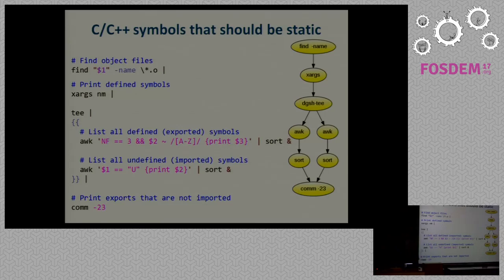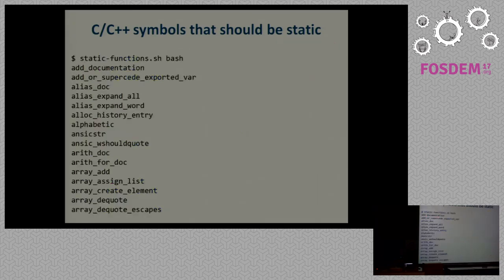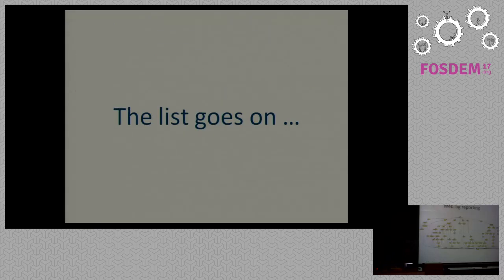Another interesting example is you want to find C and C++ symbols that should be static. You can do that very easily if you run nm on compiled files, and you find the symbols that are exported from various compiled files but are not imported into any other file. Those, obviously, symbols should be static because no one uses them outside that file. So again, a multipipe block on the output of nm to find those that are exported and those that are undefined. And those that are not imported are the ones that we want. So if I run that on Bash, I see a list of files. The list goes on.